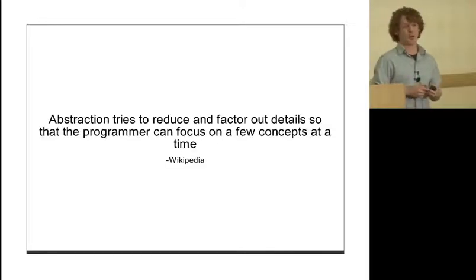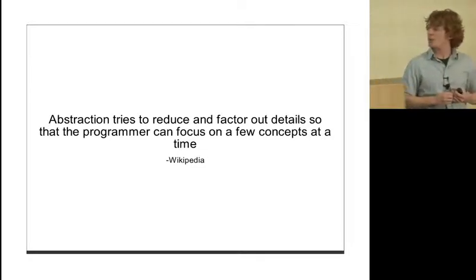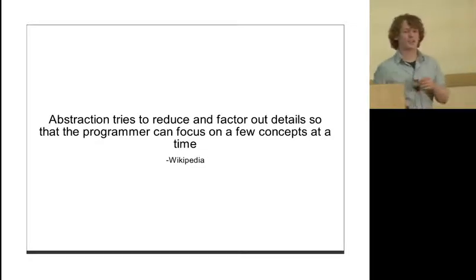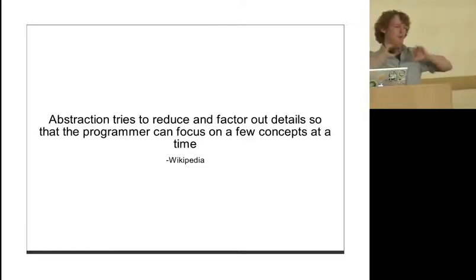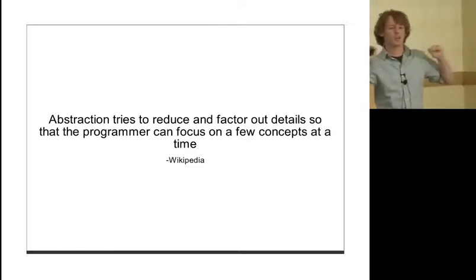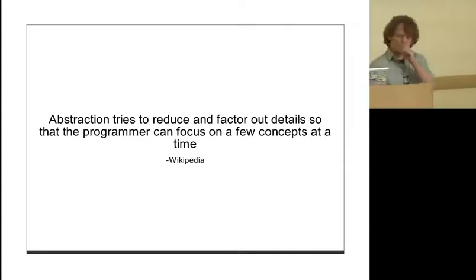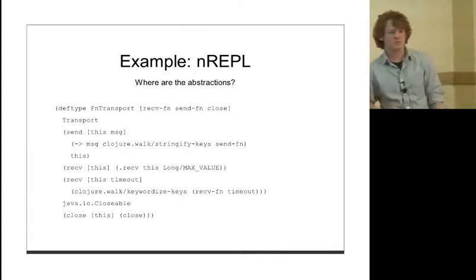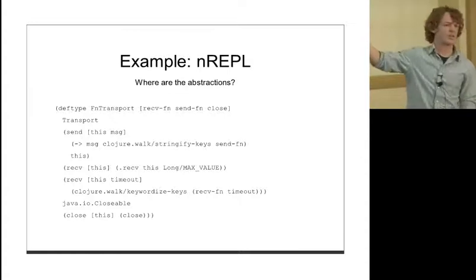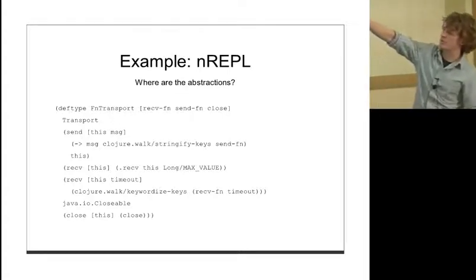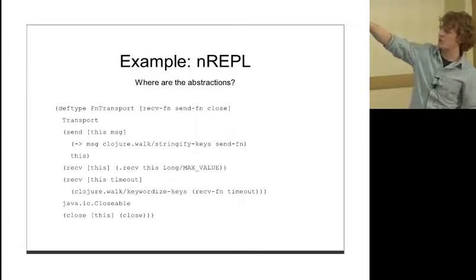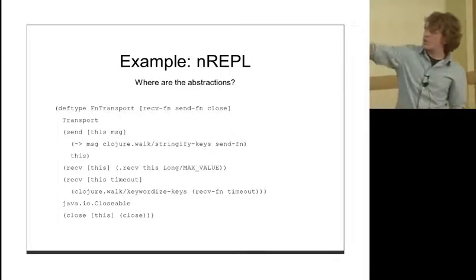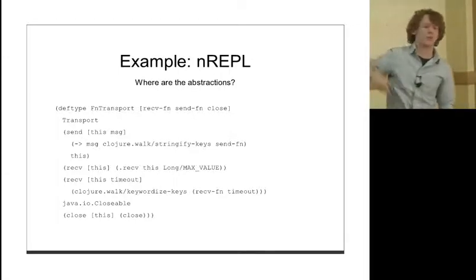What is an abstraction, really? In OO we talked about interfaces. Protocols are the obvious Java-y abstraction. Abstraction is factoring out details - we don't want to think about all the details of the thing we're doing. Let's point out the abstractions in this code. Transport is one - it's a protocol. Closeable - a Java interface. And I'm going to assert that receive-fn, send-fn, and close are all abstractions too. These are functions being passed in, and we're going to call them without knowing the internal implementation details.